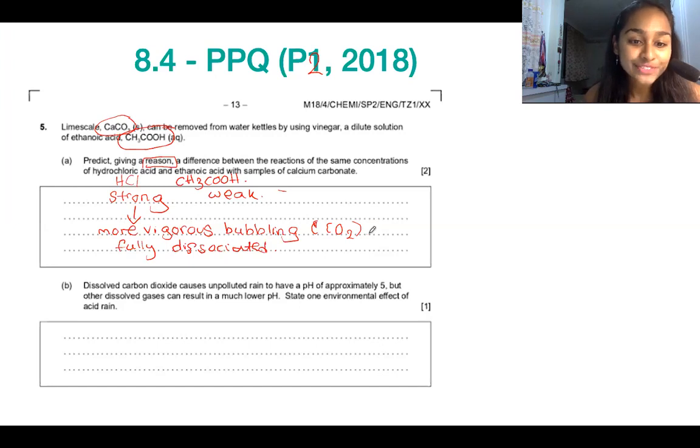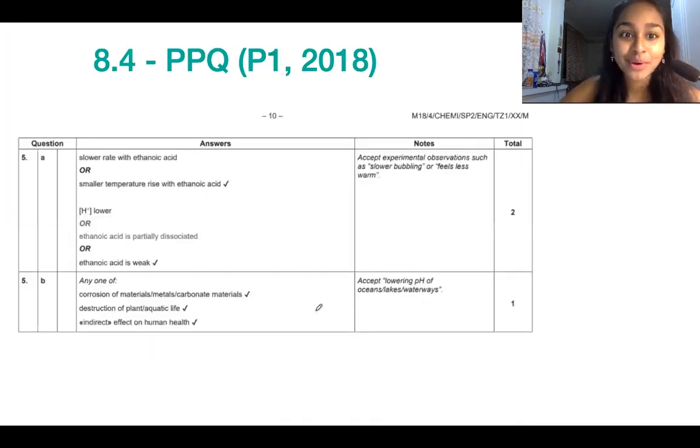The next bit: dissolved carbon dioxide causes unpolluted rain to have a pH of approximately five, and other dissolved gases can result in a much lower pH. State one environmental effects of acid rain. This is coming into territory of 8.5, but I just thought we'd cover it here. One of the main effects of acid rain is that it destroys aquatic life. So that's an easy one marker for you. I put in the mark scheme for you here as well, just so you can see how your answers compare.